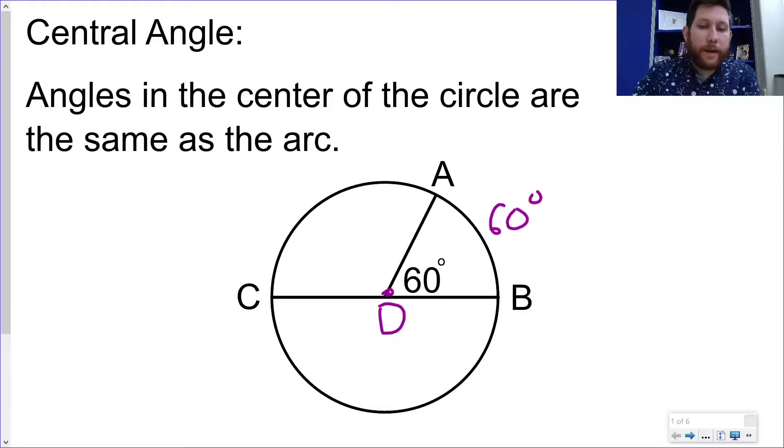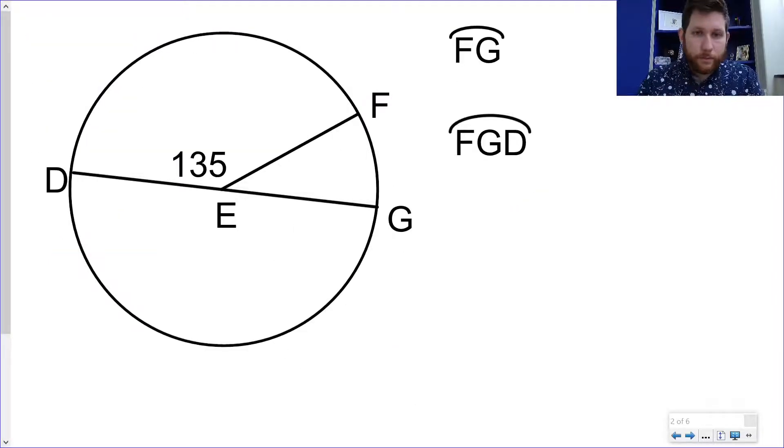Now the way we would talk about that is we would say the measure, so we do an m of AB and we put a little arc over top. So remember with segments, if I was talking about like segment AB, I'd put a little line across the top. In this case, I'm doing an arc AB, so I'm going to put a little arc over the top. All right, so let's go ahead and solve for some arc measures.